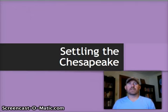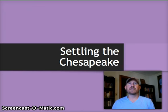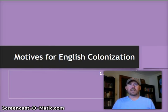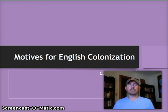This is the third lecture in the 2015 Conor Landa APUSH online lecture series. In this one we're going to be talking about English colonization and more specifically settling the Chesapeake region. Before we actually start talking about the colonies themselves, particularly Virginia and Maryland, we've got to figure out why did England decide to do this. The first thing we're going to deal with very briefly are the motives for English colonization overall.